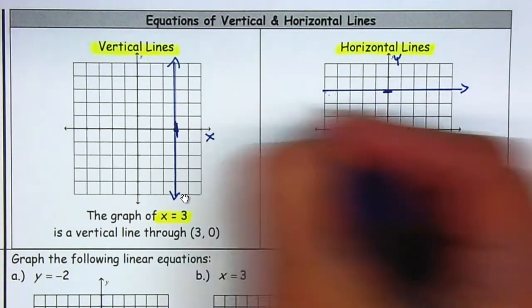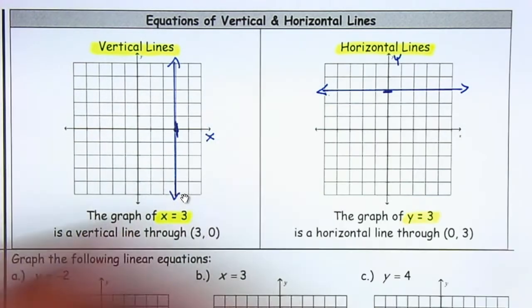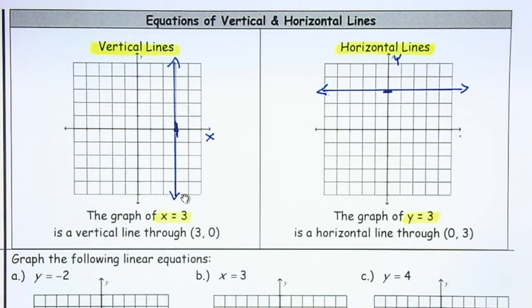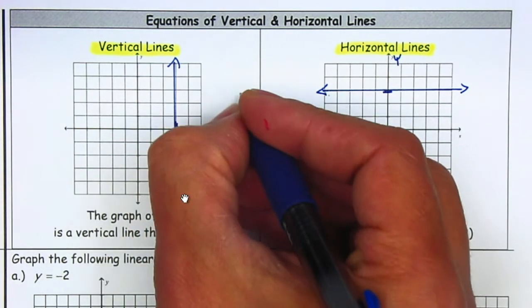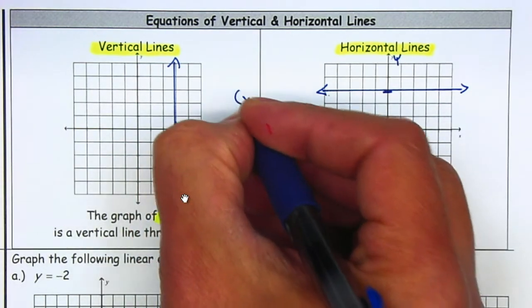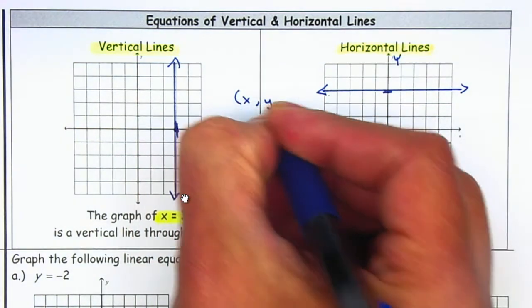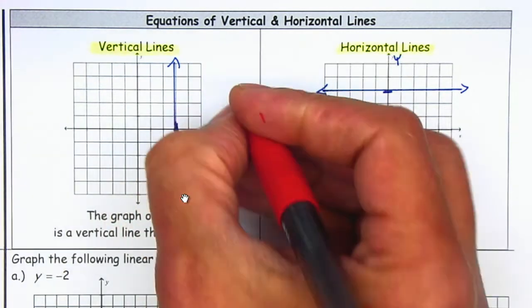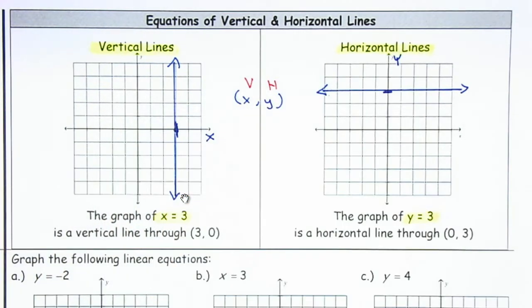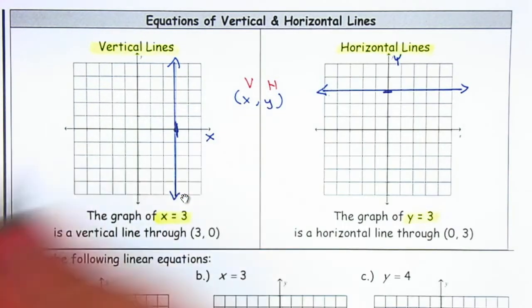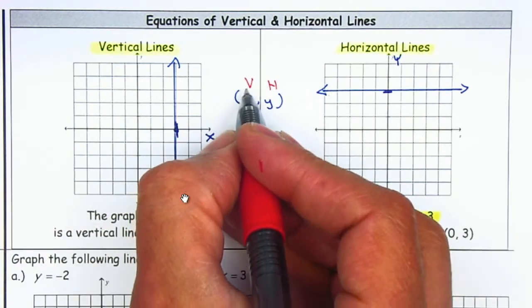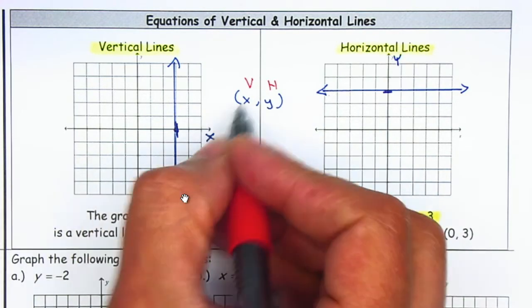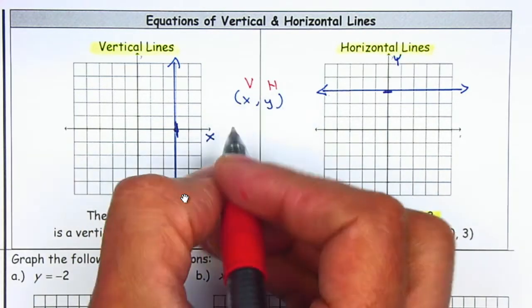Make an arrow on each end. Now one easy way to remember this is to write down x, y, v, h on top. You can think of Van Helsing or Vanessa Hudgens.